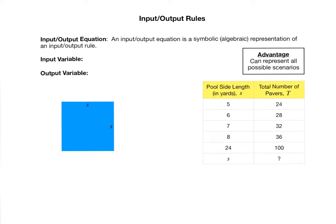Our next step is to see if we can represent the input-output rule in the form of an equation. An input-output equation is a symbolic representation of an input-output rule. Often you'll hear me say algebraic instead of symbolic, meaning the same thing in this case. And you're going to see the incredible power of having an input-output equation is that it can represent all possible scenarios.